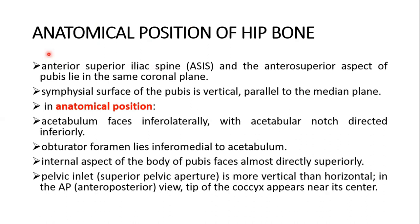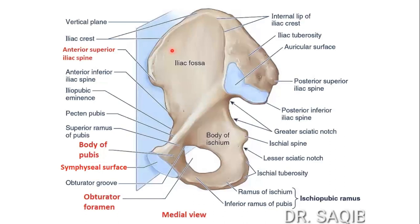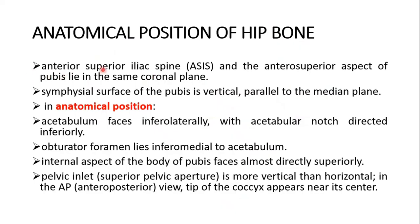The anatomical position of the hip bone is very important. If the bone is of the right side, we put the right hand in the greater sciatic notch. We keep the symphysial surface and the anterior superior iliac spine in one vertical plane. The anterior superior iliac spine and the introspiral aspect of the pubis lie in the same coronal plane. The symphysial surface of the pubis is vertical, parallel to the median plane.